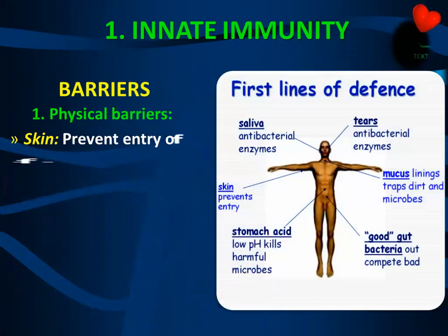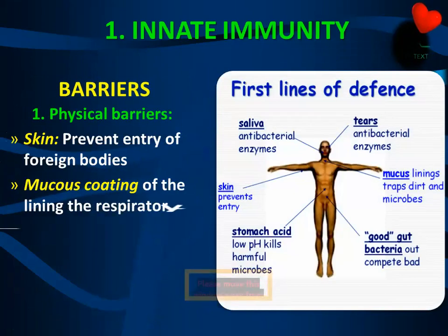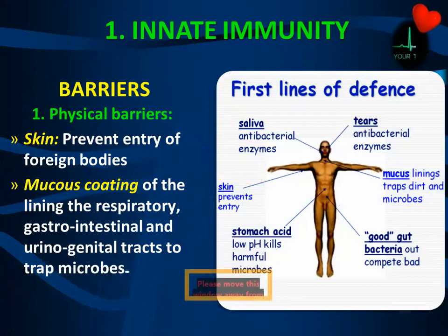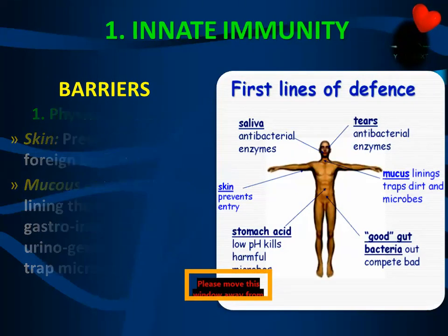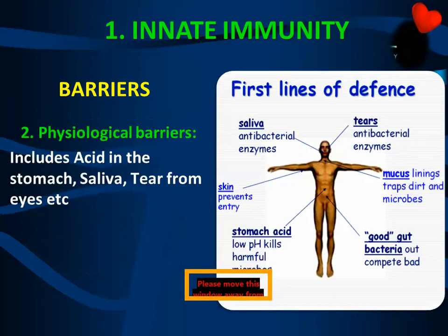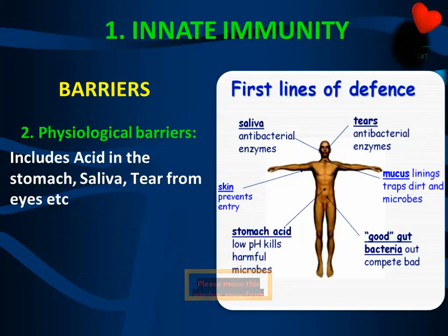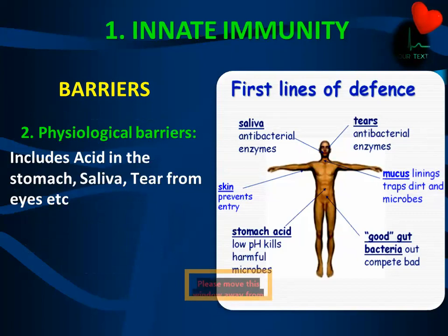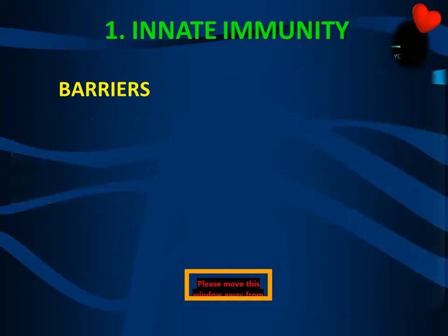The physical barriers include the skin, which prevents entry of foreign bodies, and the mucus coating of the linings of the respiratory, gastrointestinal, and urogenital tract, which traps microbes. The physiological barriers include acid in the stomach, saliva, and tears from the eyes. Tears contain the enzyme lysozyme — these are all physiological barriers.